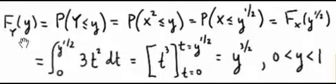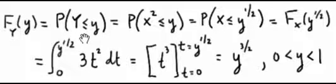We'll start with the definition of the cumulative distribution function. The cumulative distribution function of y is by definition the probability that y is less than or equal to y.